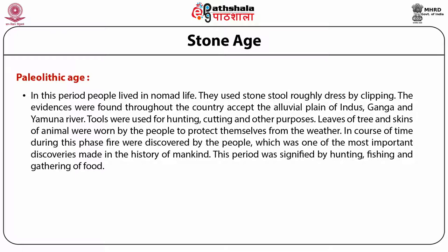In the Paleolithic Age, people lived a nomadic life, moving from place to place with no permanent settlement, searching for livelihood. Stone tools were used roughly dressed by chipping, for purposes such as hunting and cutting. People used leaves of trees and skin of animals to protect themselves from weather. Fire was also discovered during this phase, one of the most important discoveries in the history of mankind. This period was characterized mainly by hunting, to some extent fishing, and largely food gathering.